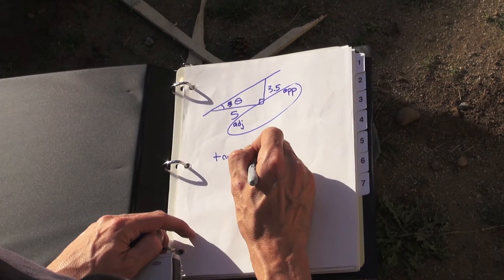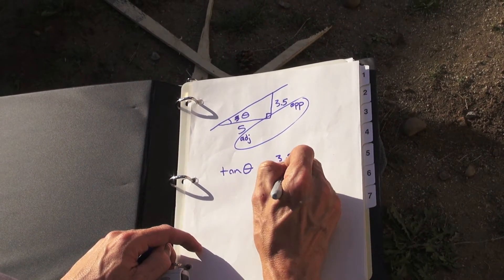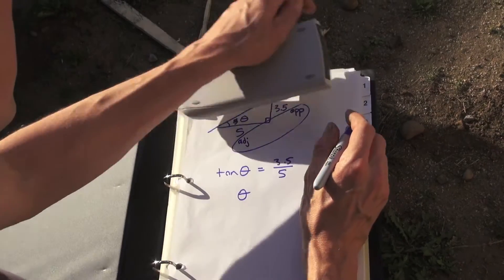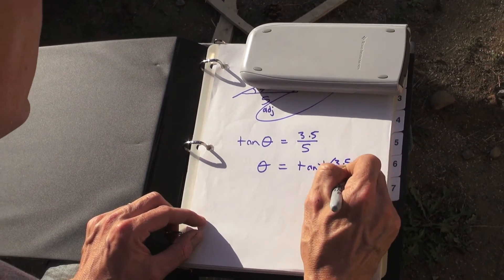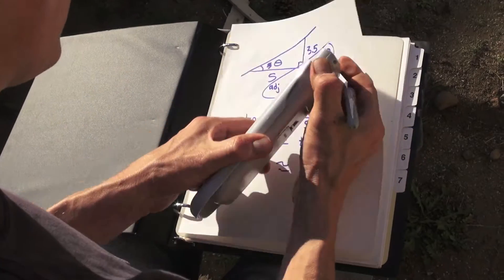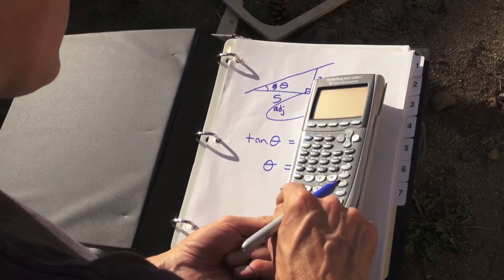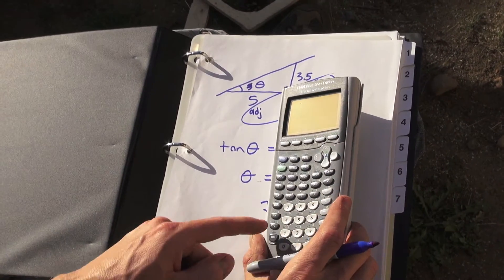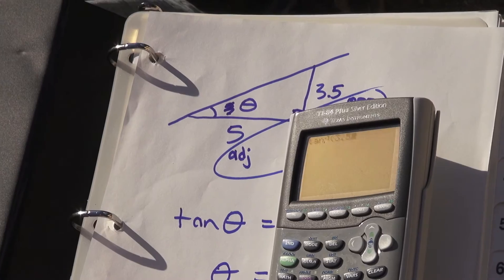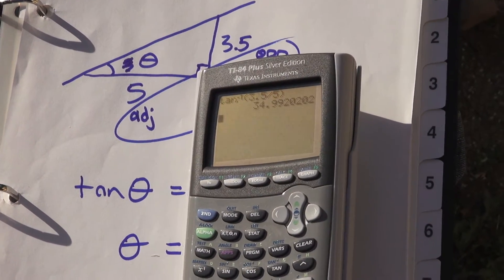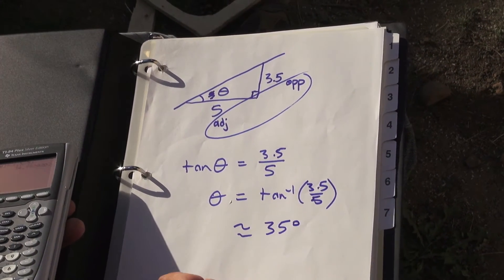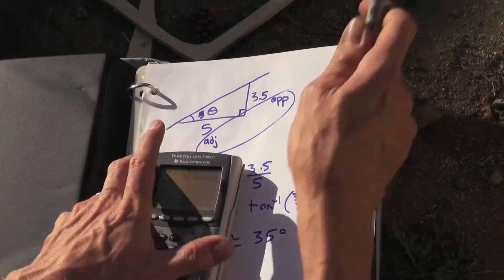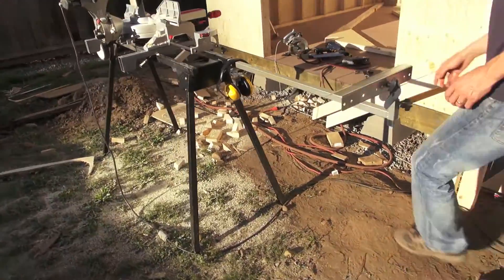Tangent of that angle is 3.5 over 5, so theta has to be tan inverse. Use the tan inverse function on the calculator: 3.5 divided by 5 equals 34.99, we'll call that 35 degrees approximately. So I can then use a saw where I can set the angle and get the rafters exactly right.